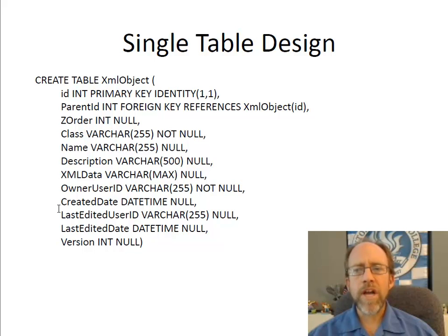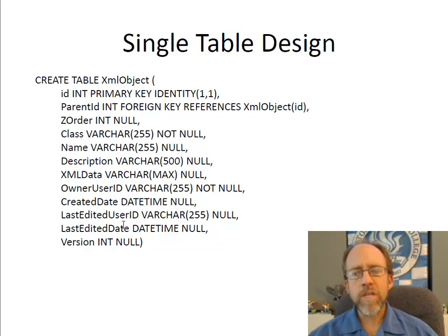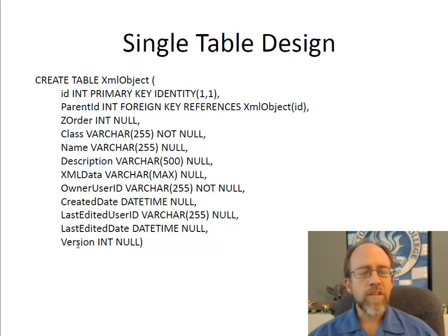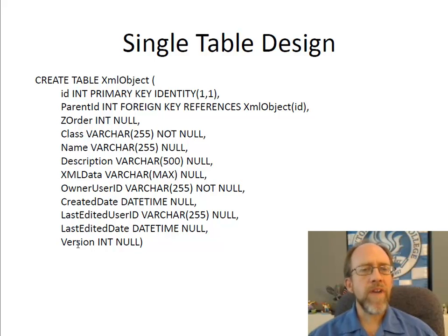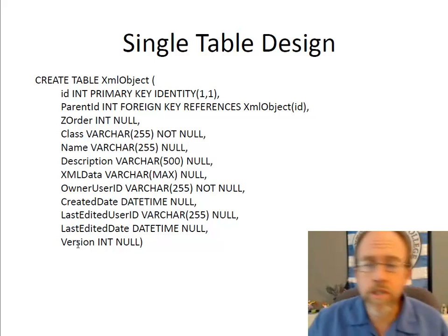Other metadata includes owner user ID, created date, last edited user date, and last edited date — these track who is modifying the object. I only do two things: remember who owned it when it was created, and keep track of that last individual edit. Finally, I have a version tag on the object. I added this but haven't used it before; however, if I had a situation where I wanted to keep versioning of different objects, I could do that. I do foresee situations in the future where versioning will be needed.